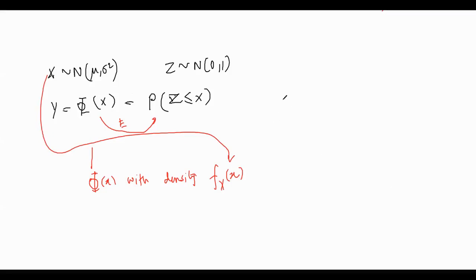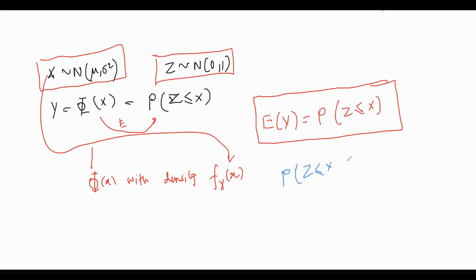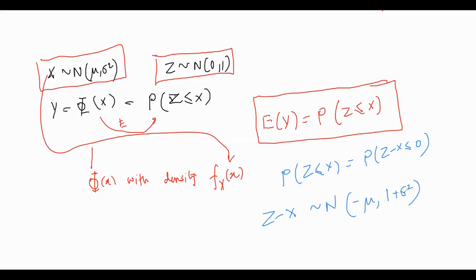Our aim is to prove that E[Y] = P(Z ≤ X), where Z ~ Normal(0,1) and X ~ Normal(μ, σ²). Once we accept this, we can see where 1+σ² comes from: P(Z ≤ X) is the same as P(Z - X ≤ 0), and Z - X ~ Normal(-μ, 1+σ²). That is exactly where μ and 1+σ² appear in the final answer.